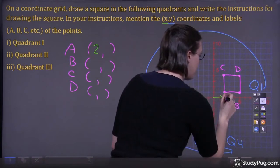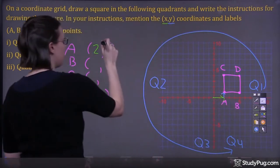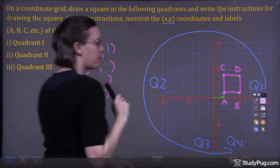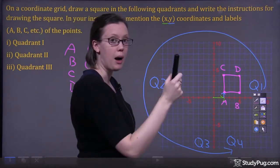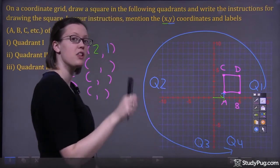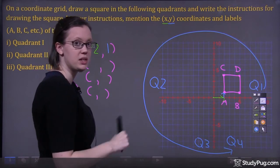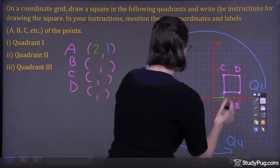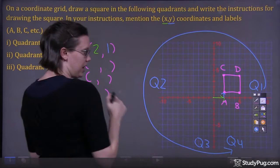And we're moving 1 up, or positive 1. Remember: when you're moving to the right or up, you're always positive. And if you're moving left or down, you're always negative. Those are our coordinates for point A.